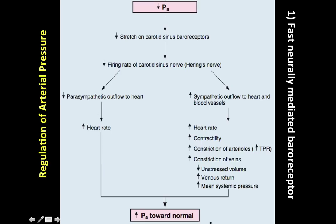It's important to know that the set point of mean arterial pressure is about 100 mmHg. Normal blood pressure is 120/80, so if it drops toward 100, the system recognizes this as low and acts to raise and normalize it. The responses of the vasomotor center are coordinated to increase arterial pressure back to approximately 100 mmHg.